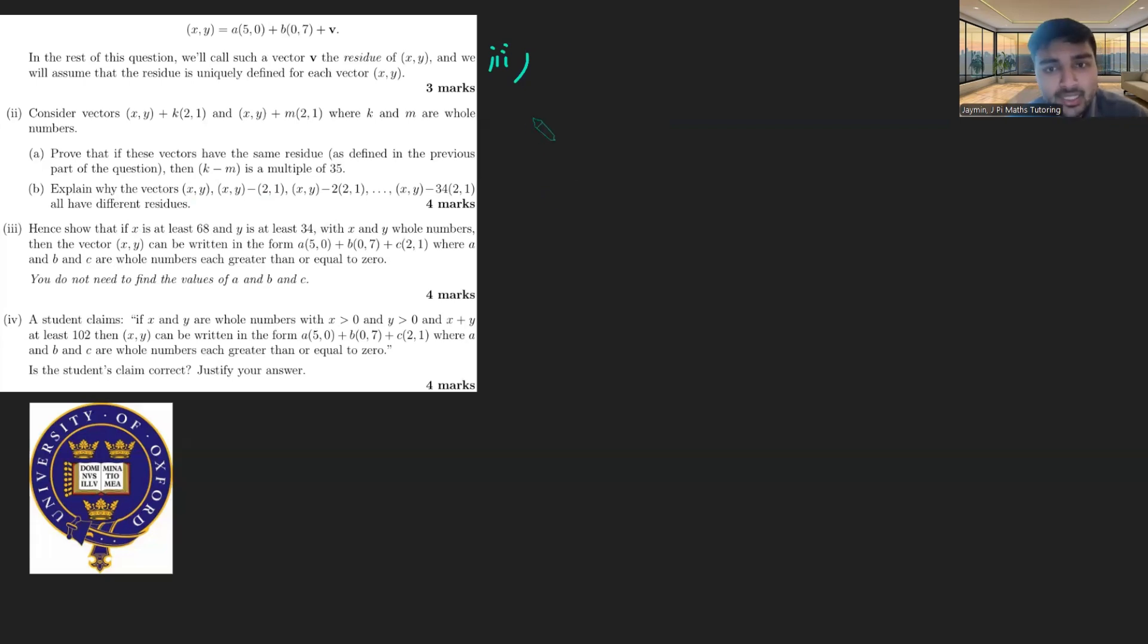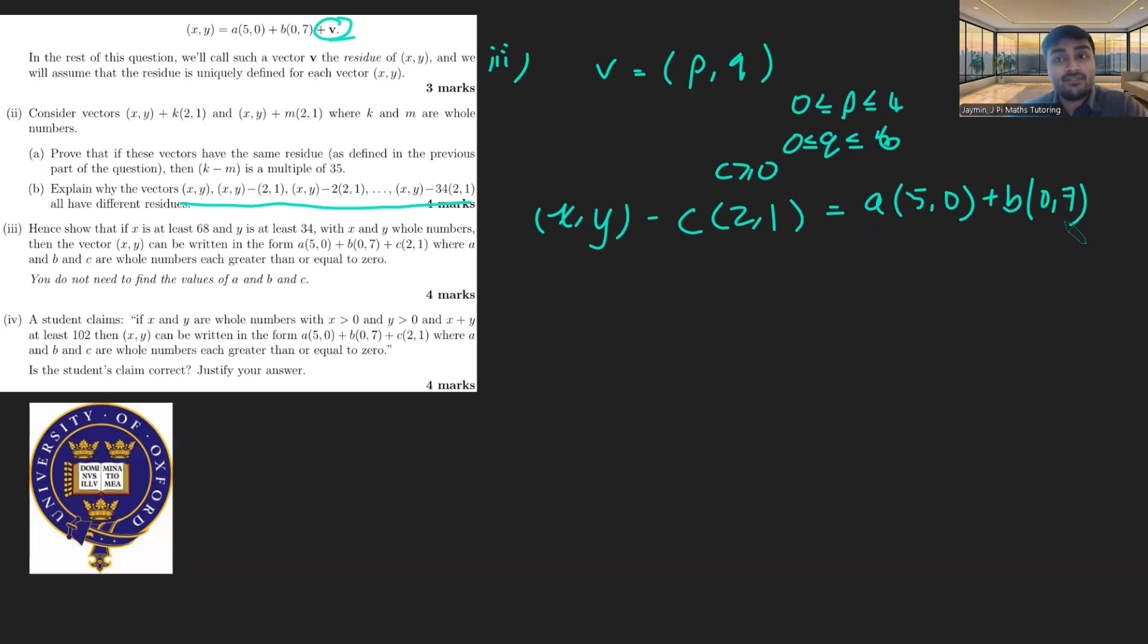We're going to use the fact that we know that all of these vectors have different residues. In particular, that's a list of 35 vectors. And since they all have different residues v, and we know that v has to be a vector in a set of size 35. Remember, v here is of the form (p,q), where p is between 0 and 4, and q is between 0 and 6. And so what we can deduce is therefore there must be one of these vectors here which has residue (0,0). And we don't know what that vector is, but it's going to be (x,y) minus c times (2,1), where c here is a non-negative integer. And we know that this is going to equal a times (5,0) plus b times (0,7) plus the vector v, but we've chosen c such that the residue is 0.